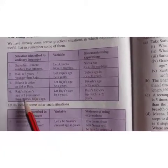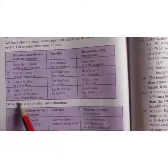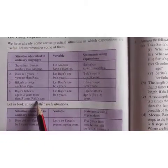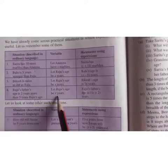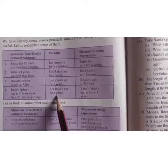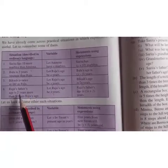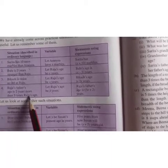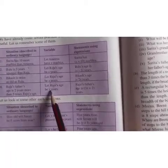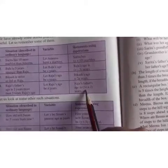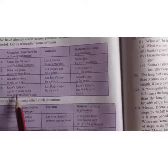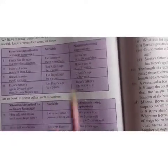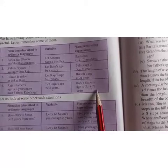Similarly, Raju's father's age is 2 years more than 3 times Raju's age. So first we have to find what is Raju's age. We will take Raju's age equals X years. So his father will be 2 years more, that is 2 plus 3 times Raju's age. 3 times Raju's age means 3 into X. So 3X plus 2, that is 2 years more. Totally Raju's father's age is 3X plus 2.